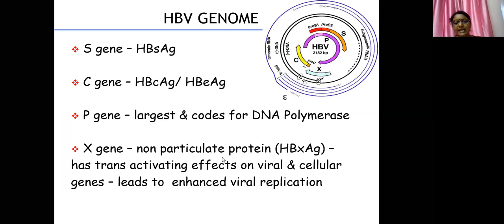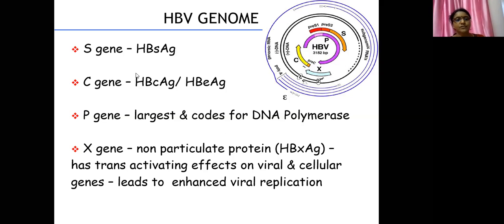HBxAg is a transactivator that enhances viral replication. When the X gene gets integrated into the host genome — because viral DNA integrates into our liver cell DNA — it affects cellular genes, leading to uncontrolled cell multiplication, and ultimately cirrhosis and cancer. To summarize: S gene codes for HBsAg; C gene codes for HBcAg and HBeAg; P gene (the largest) codes for DNA polymerase; and X gene codes for HBxAg.